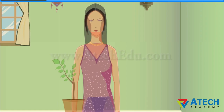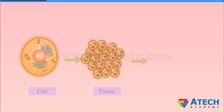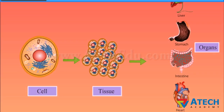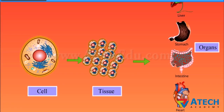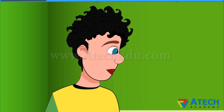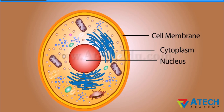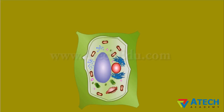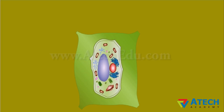We will have to understand the parts of a cell first. The main parts of the cell are cell membrane, cytoplasm, and nucleus. This membrane separates cells from one another and also from the other medium. This membrane is porous and allows movement of substances.